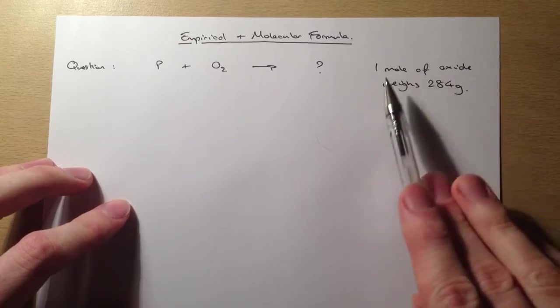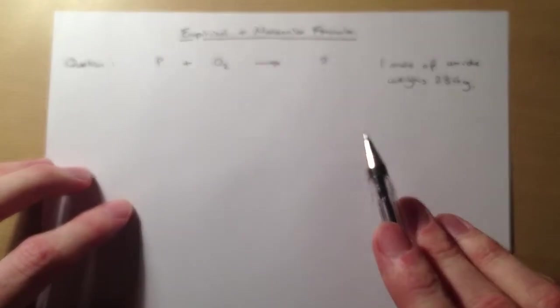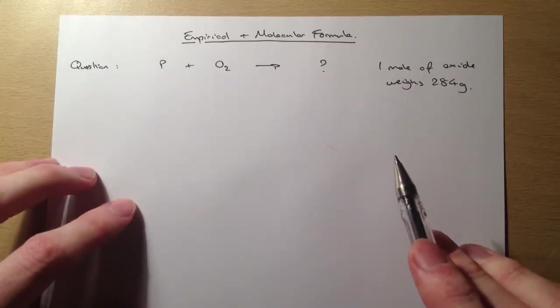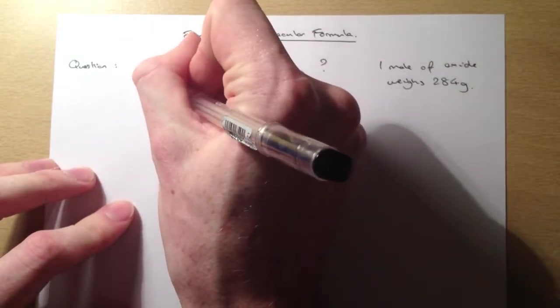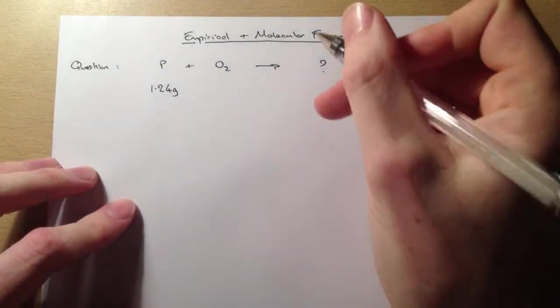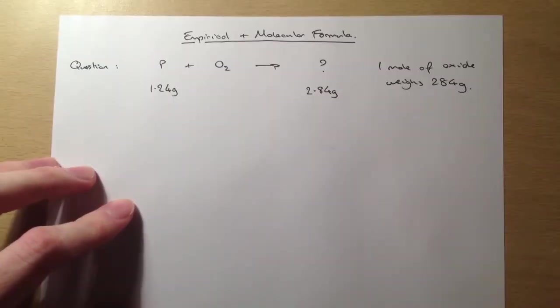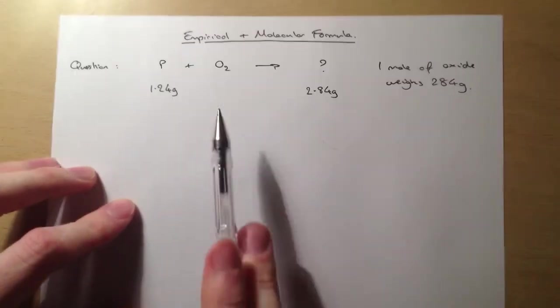given that one mole of the oxide weighs 284 grams. So that bit's important for working out the molecular formula a little bit later on. So let's find out, first of all, what we've got and what it is we're trying to find out.